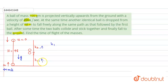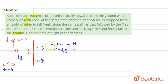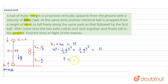For collision, h1 + h2 must equal the total distance of 98 meters. h1 = ut - ½gt² and h2 = ½gt², since the dropped ball starts from rest. Adding these: h1 + h2 = ut = 98. So t = 98 / 49, which gives t = 2 seconds. The two balls collide after 2 seconds.